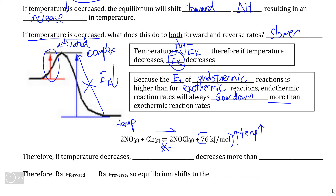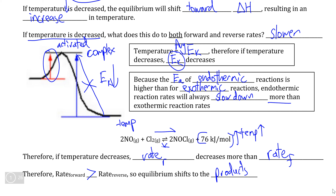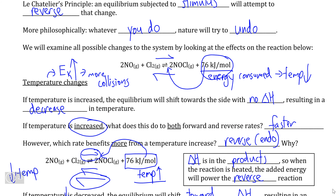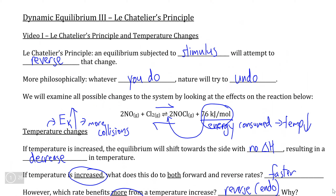In conclusion, if temperature decreases in this reaction, the rate of the reverse reaction decreases much more than the rate of the forward reaction. Since the forward rate is faster, our equilibrium shifts to the products — and more importantly, toward delta H — so that temperature can increase and compensate for the original change. In the next video, we're going to examine the effects of Le Châtelier's Principle regarding concentration and gas pressure changes.